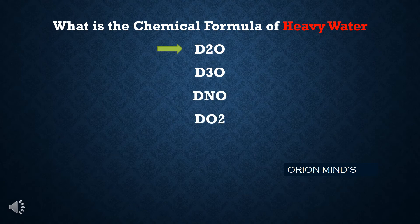What is the chemical formula of heavy water? The answer is D2O — Deuterium oxide.